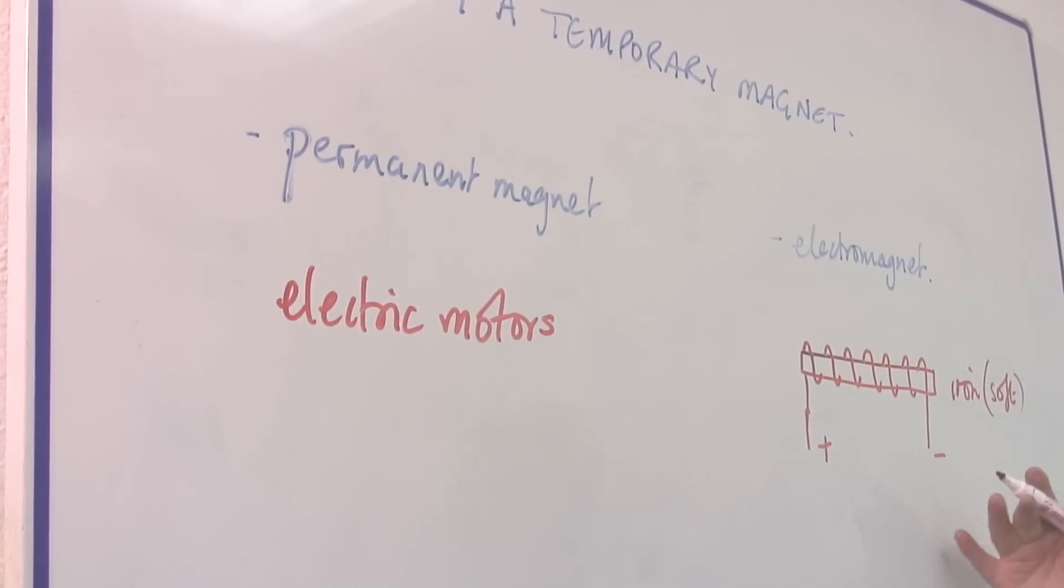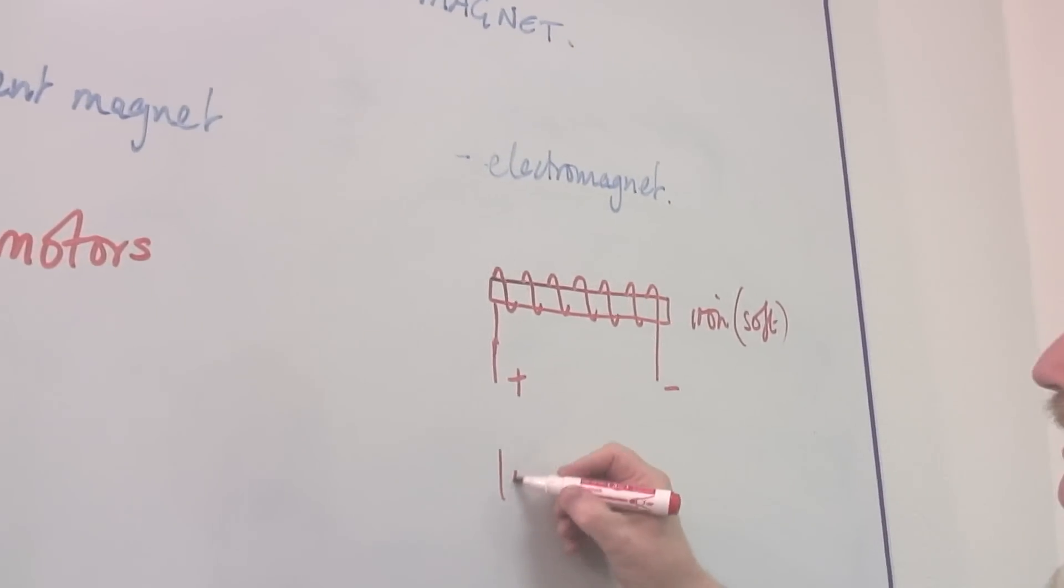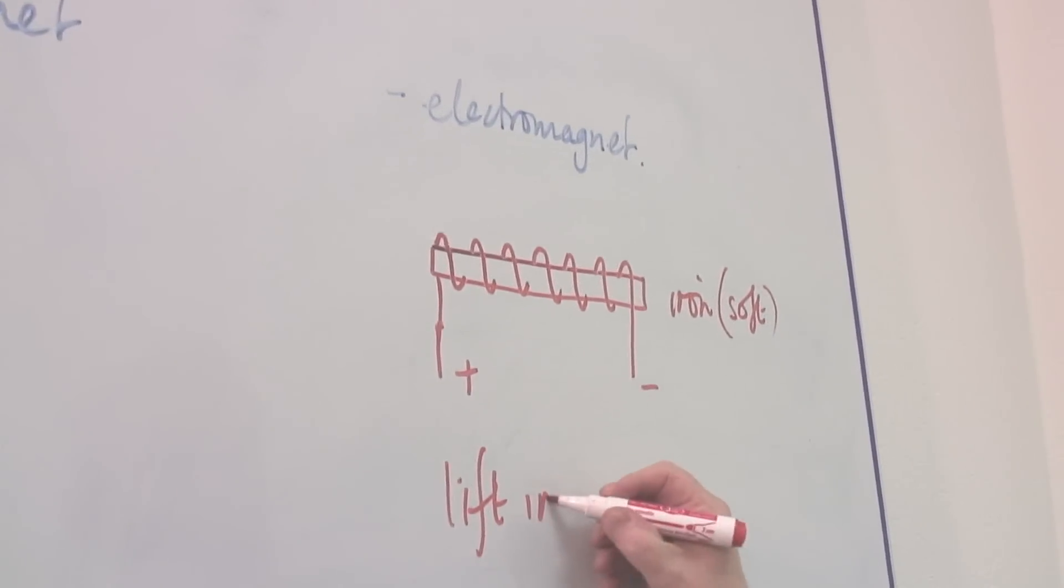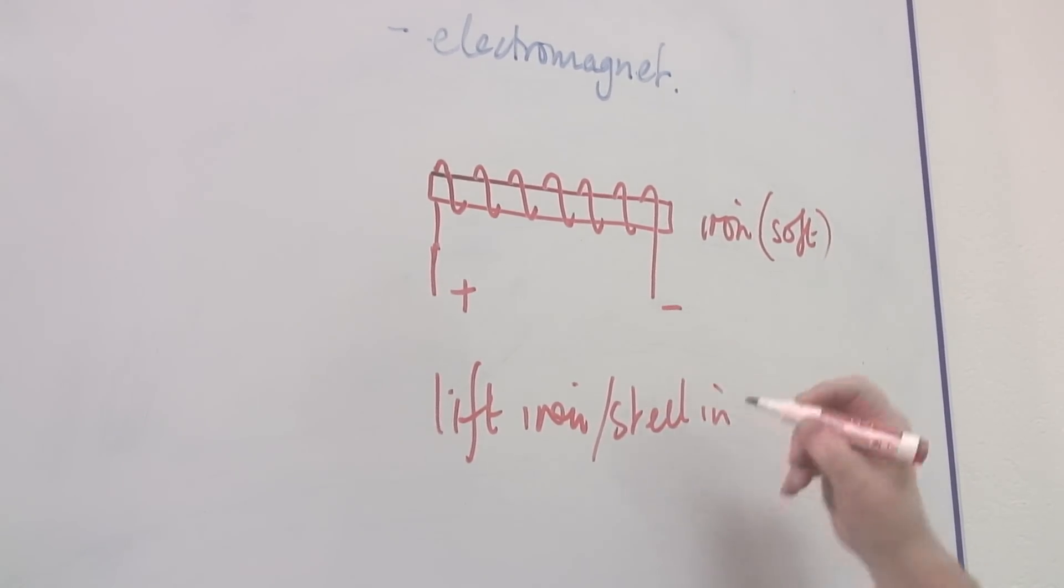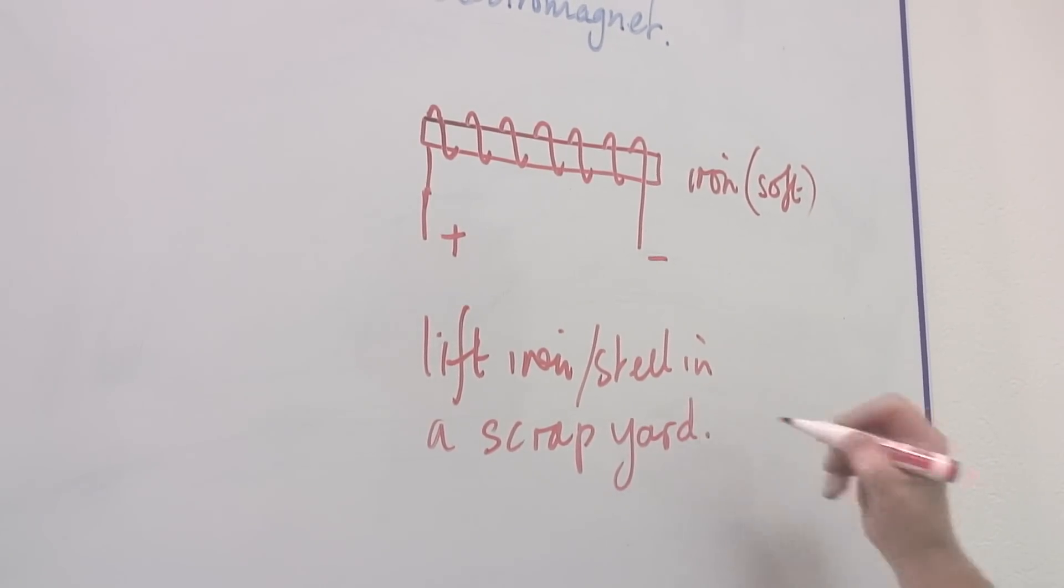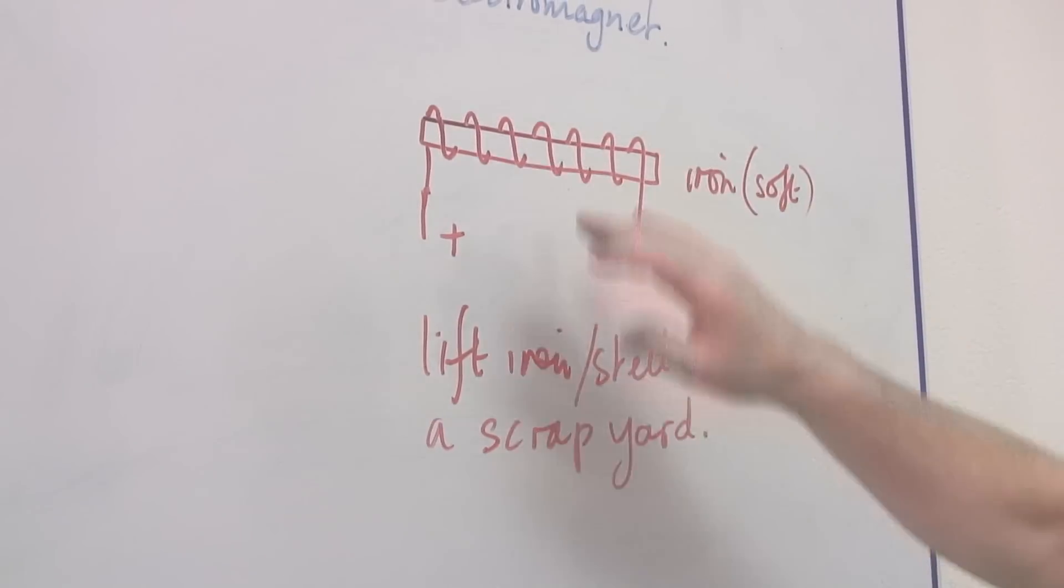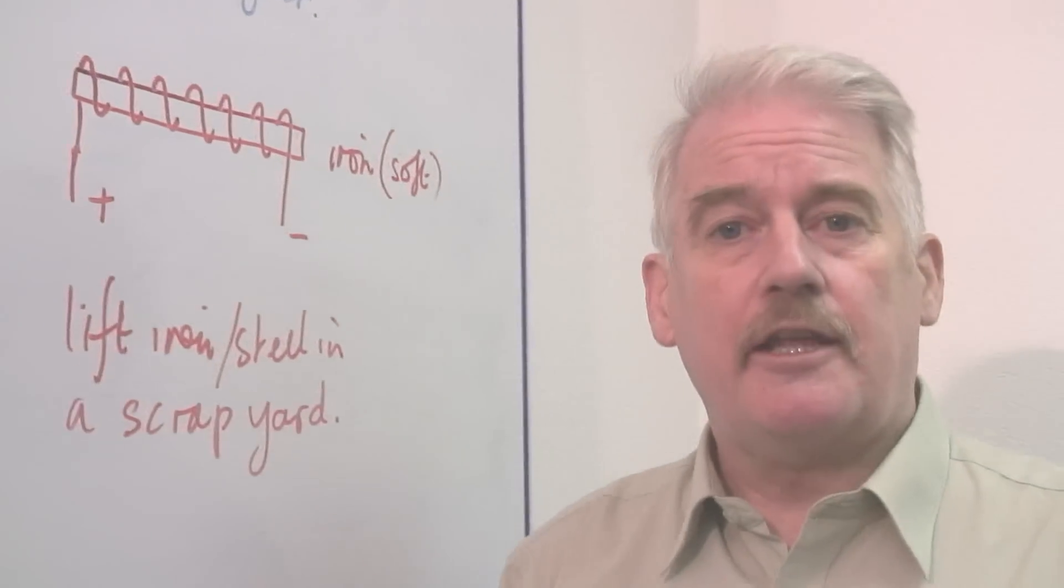But something like an electromagnet, a temporary magnet, might be used to lift iron, or steel, in a scrap yard, for example. So this is where the temporary magnet, or electromagnet, is useful, because if I want to pick up a piece of steel, I pick it up,